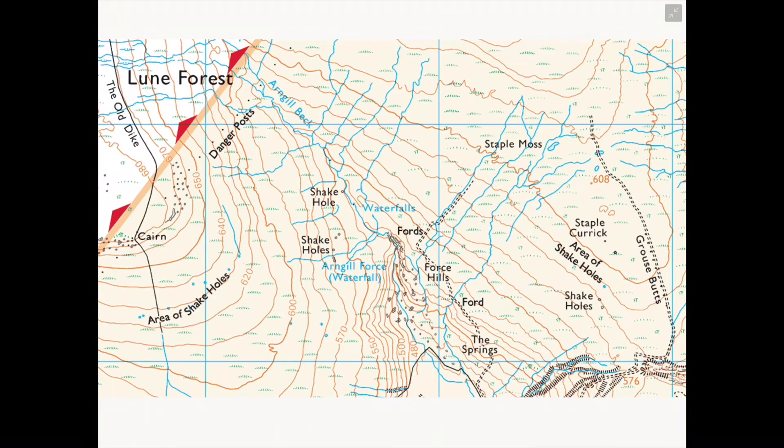Alternatively, you could also be given some type of OS map question where you might be asked to identify the upper course of a river or where we potentially would find evidence of interlocking spurs and V-shaped valleys. For this particular style of question, you would need to concern yourself with the contour lines.